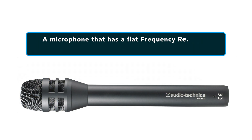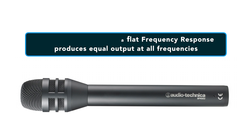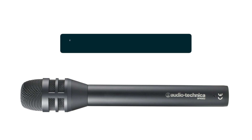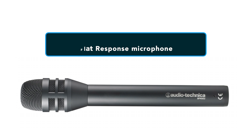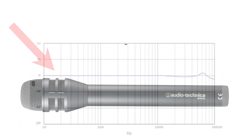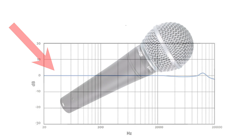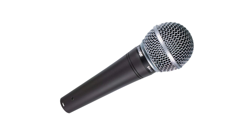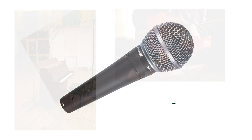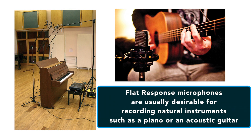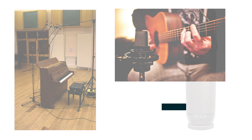A microphone that has a flat frequency response produces equal output across all frequencies. This type of microphone is known as a flat response microphone. On the graph, the curve will be drawn as a flat line. Flat response microphones are usually desirable for recording natural instruments such as a piano or an acoustic guitar, because it means that they record all the various tones and frequencies equally.